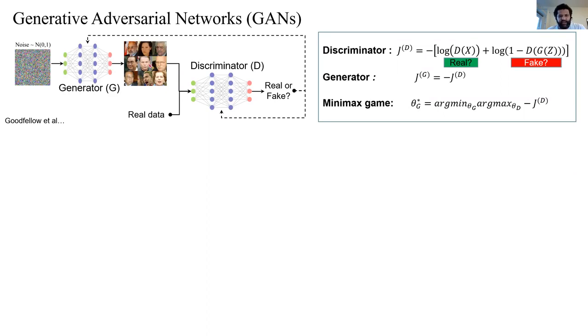It does that with the help of two submodels, a generator that takes a random noise vector and generates a data sample. And a second submodel, which is a discriminator, which classifies that sample to be real or not, and it has access to the real data.